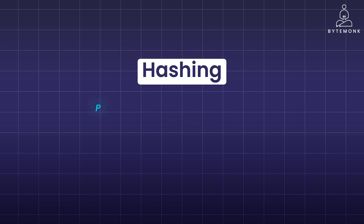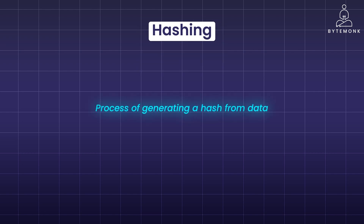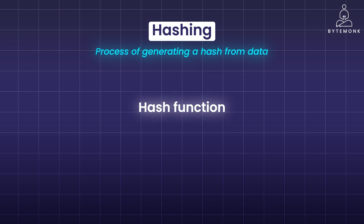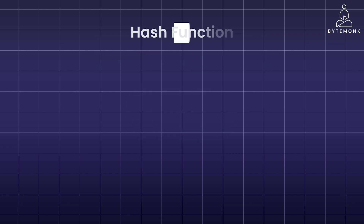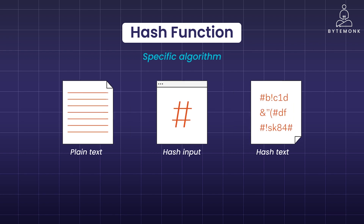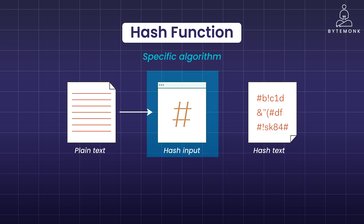Coming back to hashing: hashing is the process of generating a hash from data. It involves applying a mathematical algorithm — the hash function — to the data. Hashing is a one-way function: you can easily create a hash from the data, but it is incredibly difficult, ideally impossible, to reconstruct the original data from the hash. A hash function is the specific algorithm used to perform hashing. It takes an input, the data, and produces a fixed-length output, the hash.